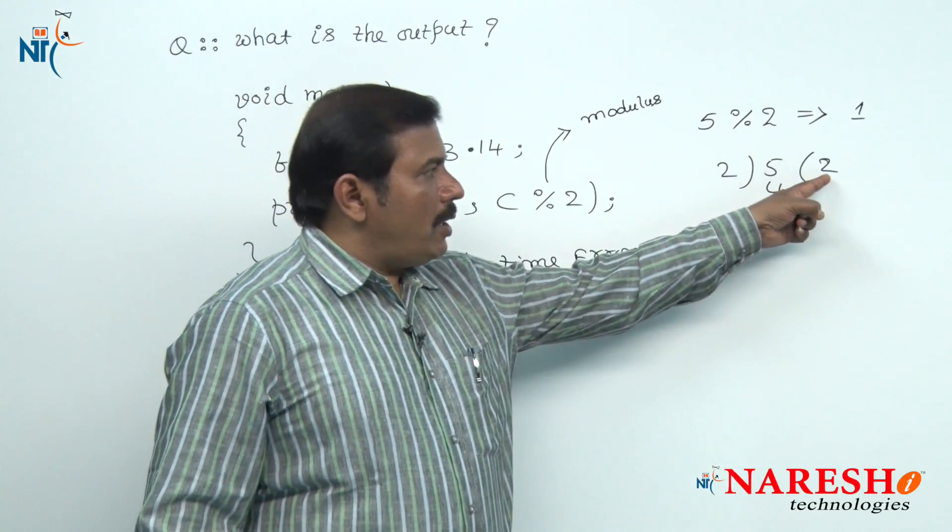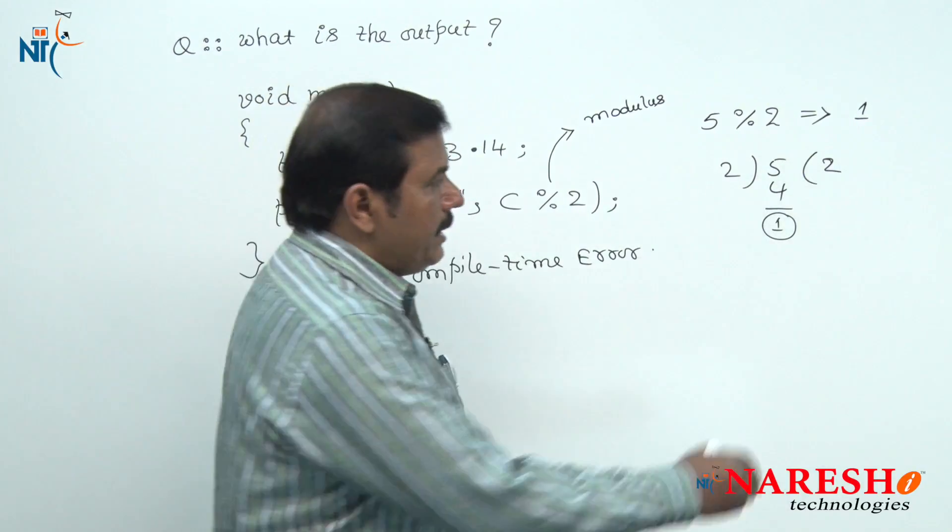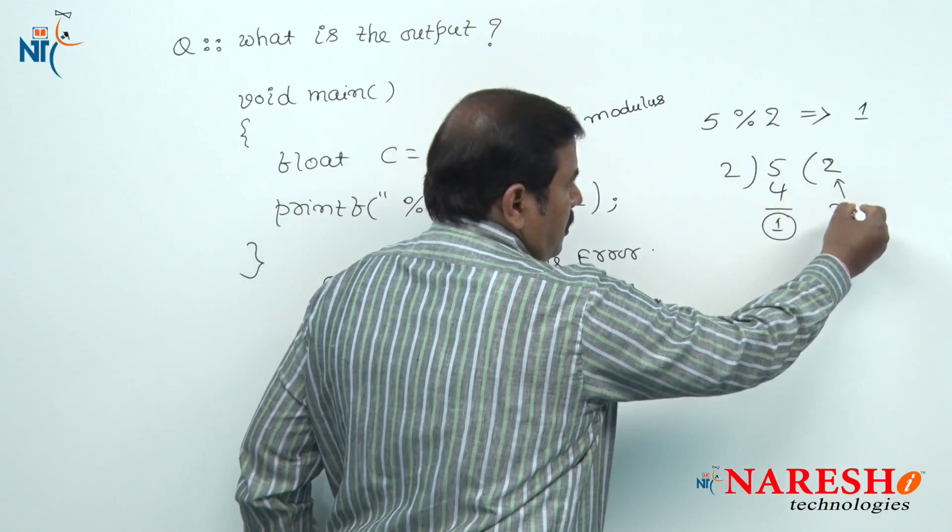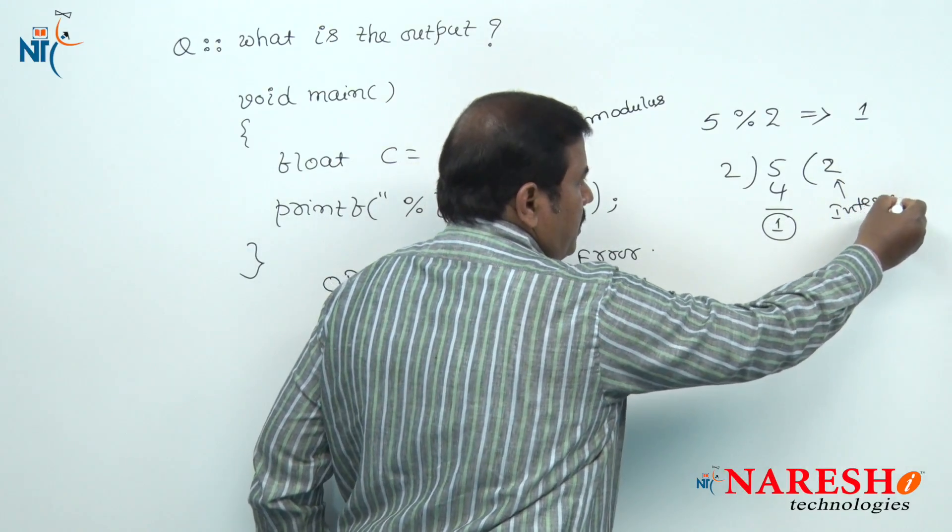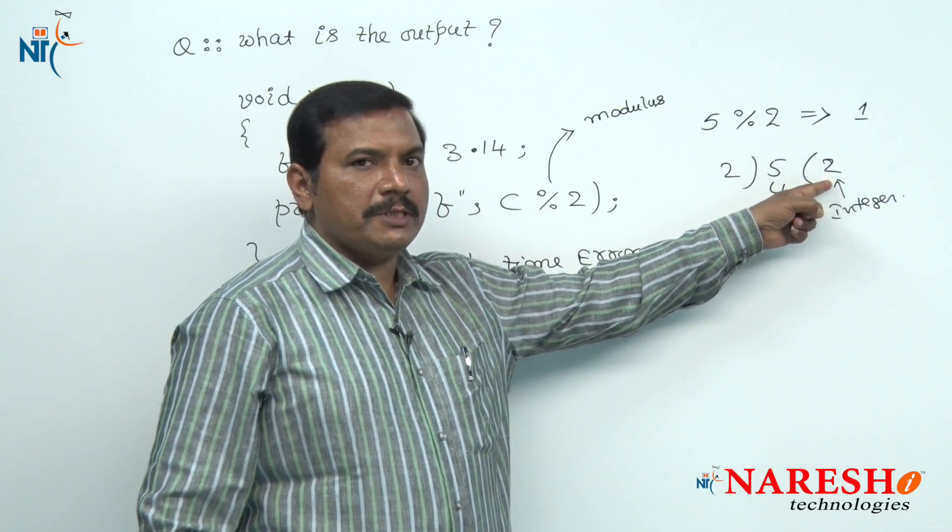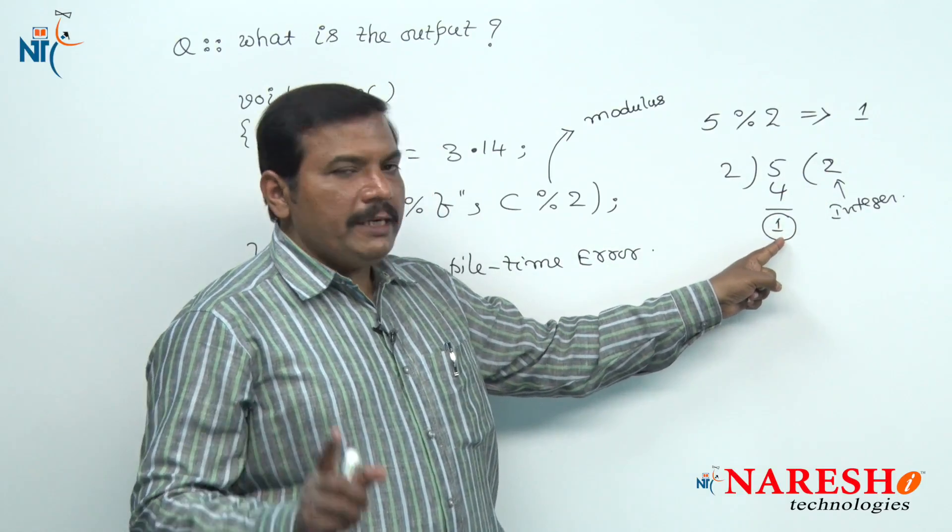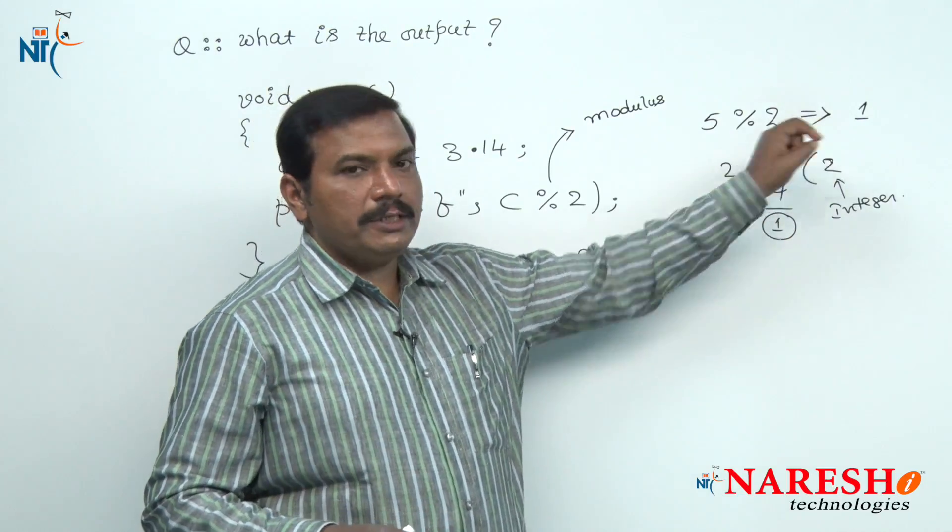Always this modulus operator performs integer division. After performing integer division, the obtained remainder is 1. Hence that is the result here.